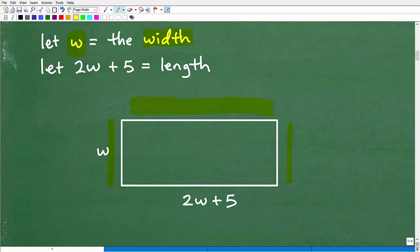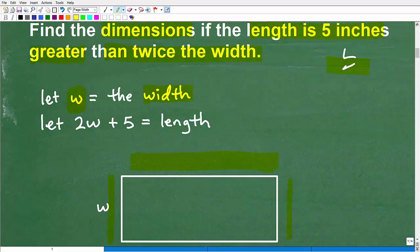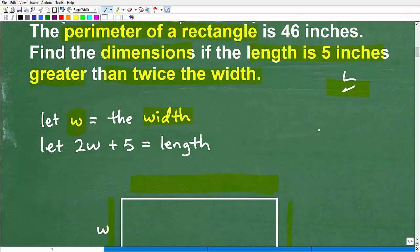Then we need to figure out what the length is. This is where we have to go back and reread the problem. Remember, I told you about reading. We got to read the problem again to make sure we know what the length is going to be. The length is going to be related to the width.